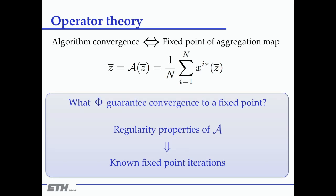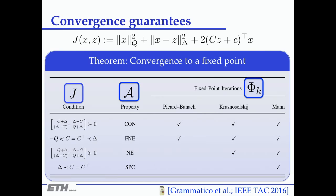Convergence is basically getting a fixed point of the aggregation map. A fixed point is a global information signal such that if you give it to the players and they respond optimally and you aggregate the solution, you get back to that global information. So it's a fixed point of this aggregation map. The question is what properties of the feedback — the information I give them — guarantee convergence to a fixed point.